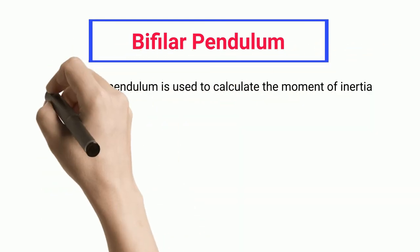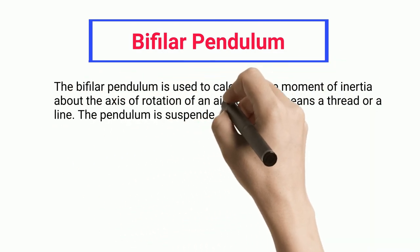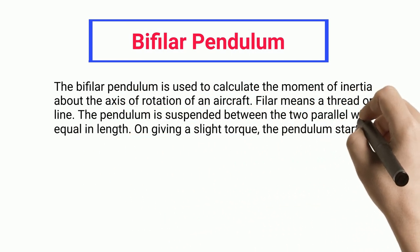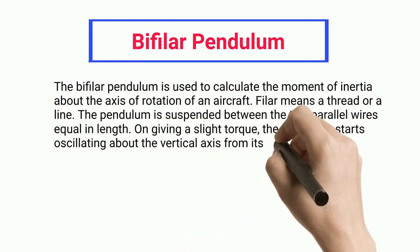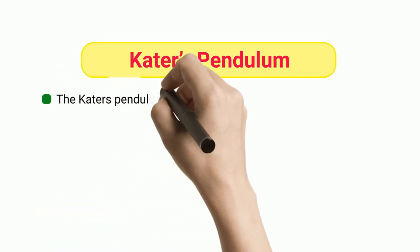Bifilar Pendulum: The bifilar pendulum is used to calculate the moment of inertia about the axis of rotation of an aircraft. Bifilar means a thread or a line. The pendulum is suspended between two parallel wires equal in length. On giving a slight torque, the pendulum starts oscillating about the vertical axis from its center of moment.